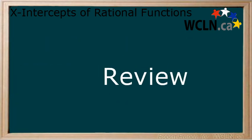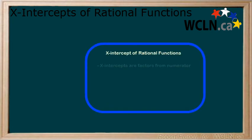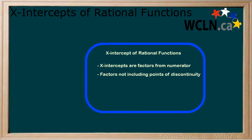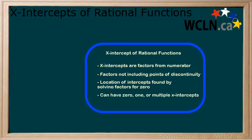In this lesson, you learned that the x-intercepts are found in the numerator. Once the points of discontinuity are ignored, the x-intercepts are the remaining factors and their location is determined by solving the factors for 0. A rational function can have 0, 1 or multiple x-intercepts.